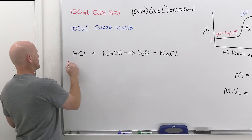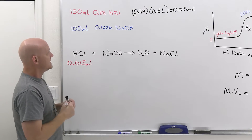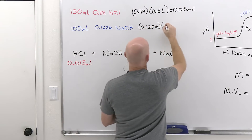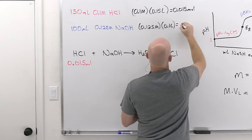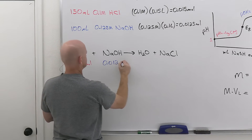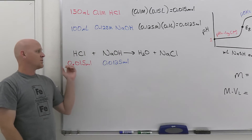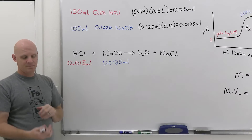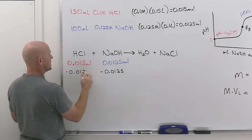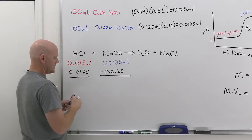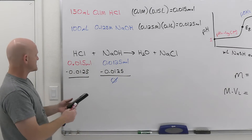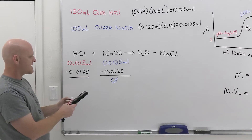We have 0.015 moles of HCl. For the NaOH at 100 milliliters, that's 0.125 molar times 0.1 liters, giving 0.0125 moles of NaOH. We can see we have more HCl than NaOH, so NaOH is the limiting reagent and we lose all of it. Since they react in a one-to-one ratio, we also lose 0.0125 moles of HCl, leaving no NaOH in solution.